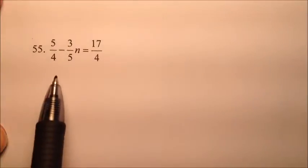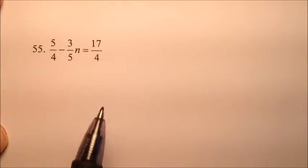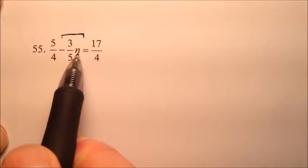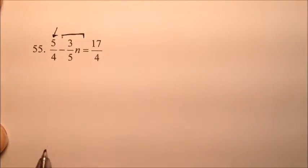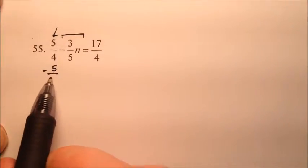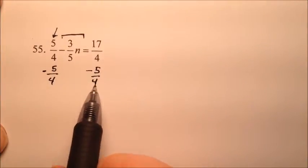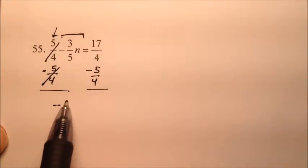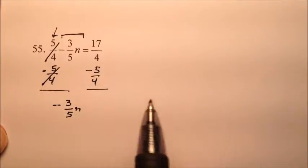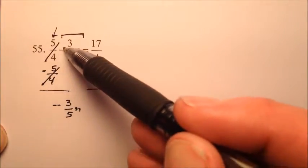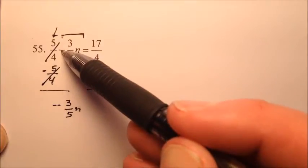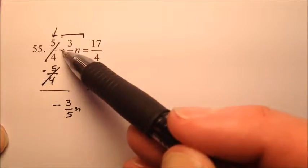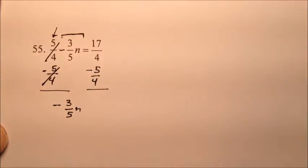Number 55 is 5 fourths minus 3 fifths n equals 17 over 4. The term containing the variable is negative 3 fifths n, so subtract 5 fourths from both sides. Those cancel, leaving negative 3 fifths n. Make sure to bring the negative down — the subtraction sign and negative are the same thing, you can't lose it.